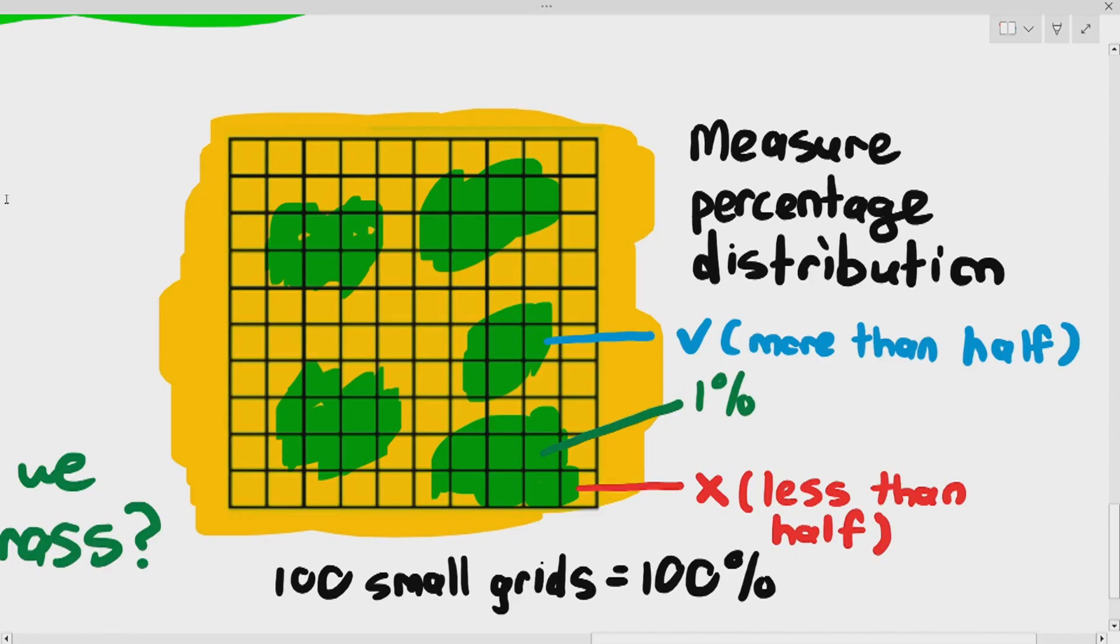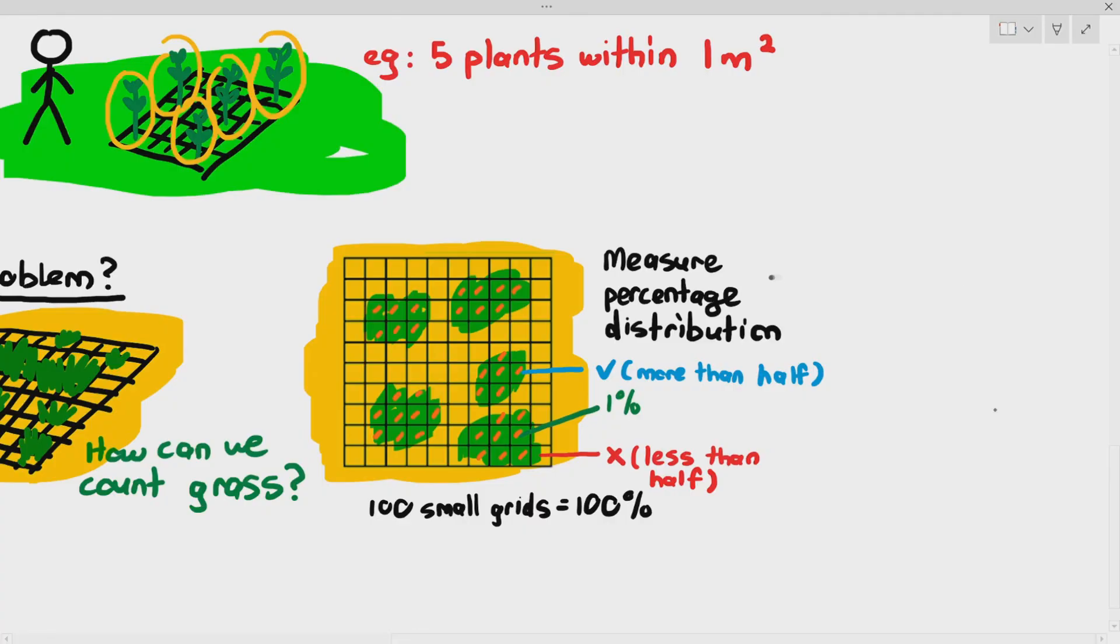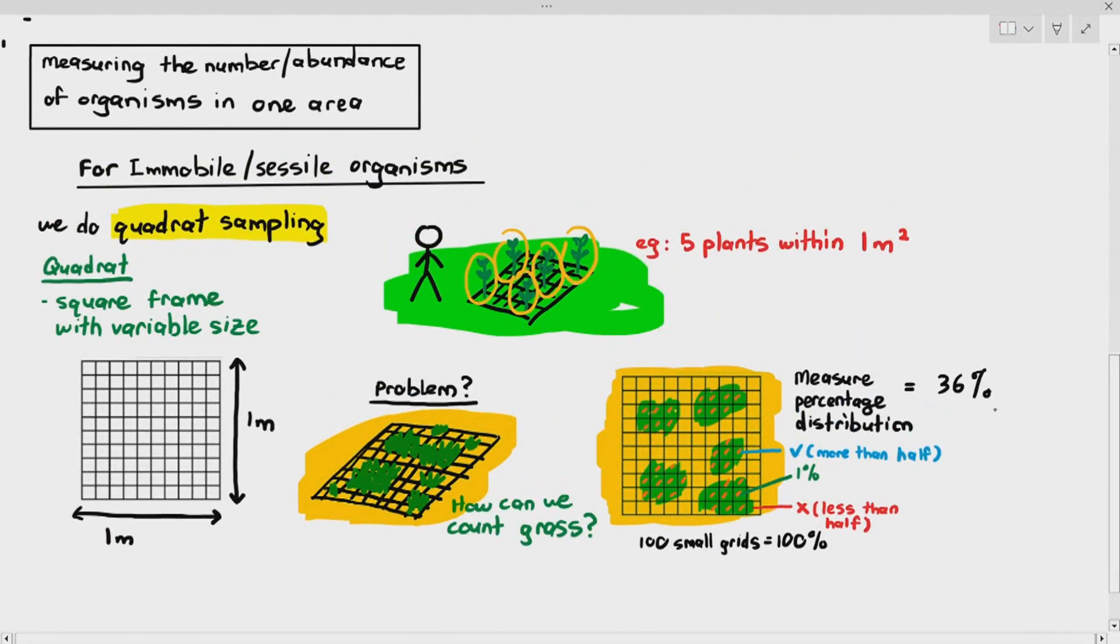So as you can see here, wherever the grass occupies more than 50% of the grid, it is counted. So 1, 2, 1, 2, 3, 4, 5, 6, 7, 8, 9, approximately 10 hours later, and it will come up to about 36%. Now, some students may be worried: what if the examiner does not assume it's 1%? You don't have to worry because normally in the exam, the answer will be in an accepted range. They will say accept the range from 34% to about 38%. So as long as you are within those range, you are fine. That's what we can do when we are using the quadrat sampling for immobile or sessile organisms.